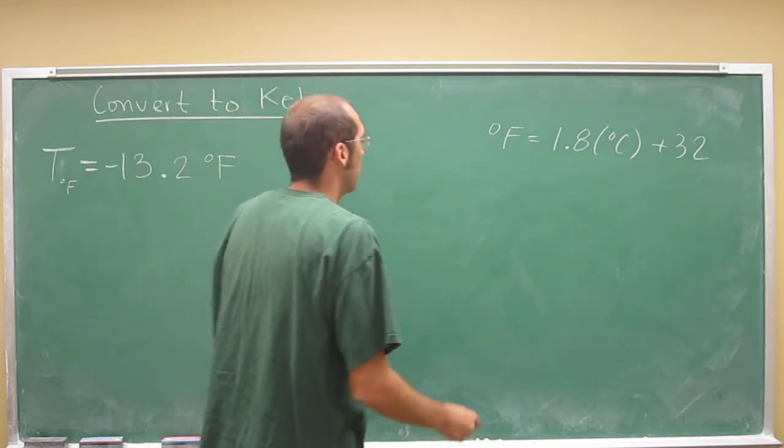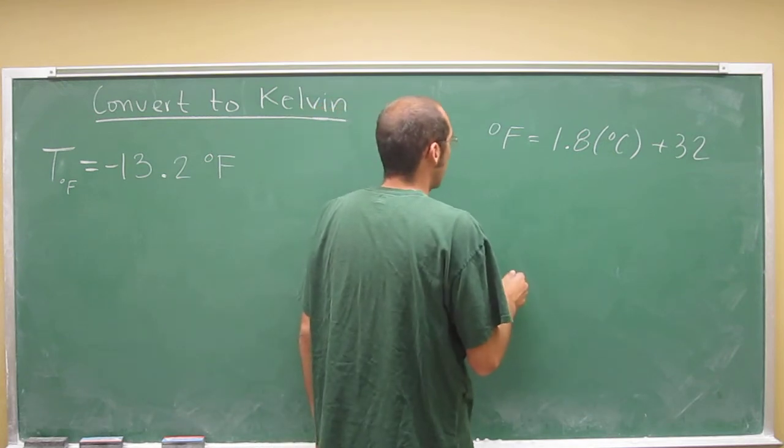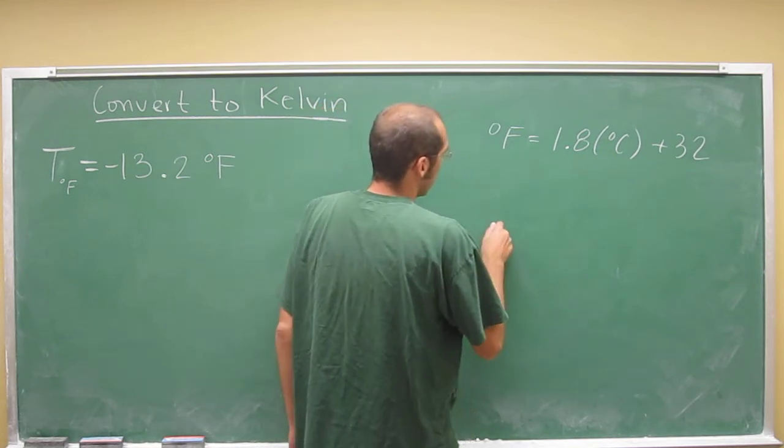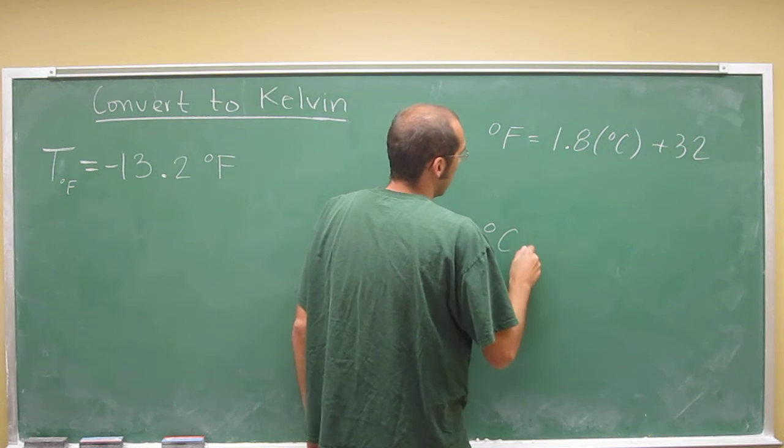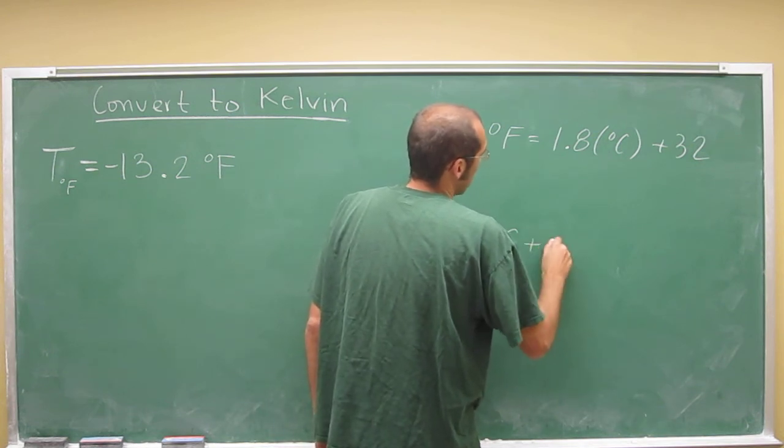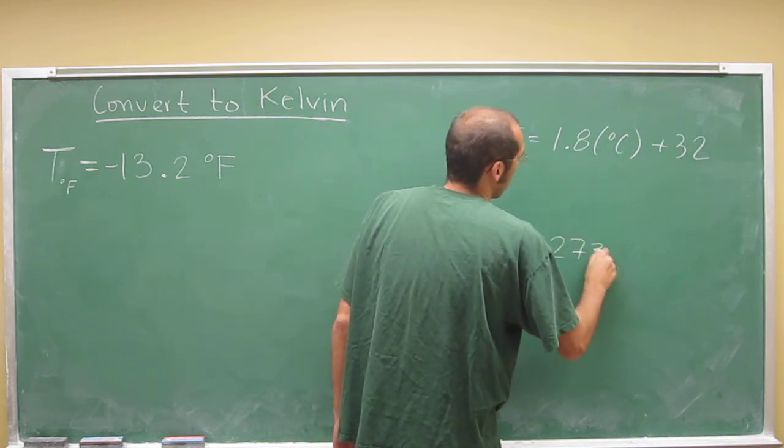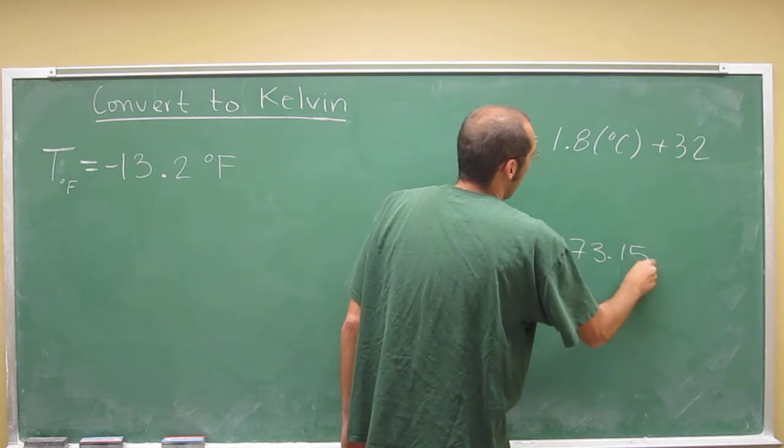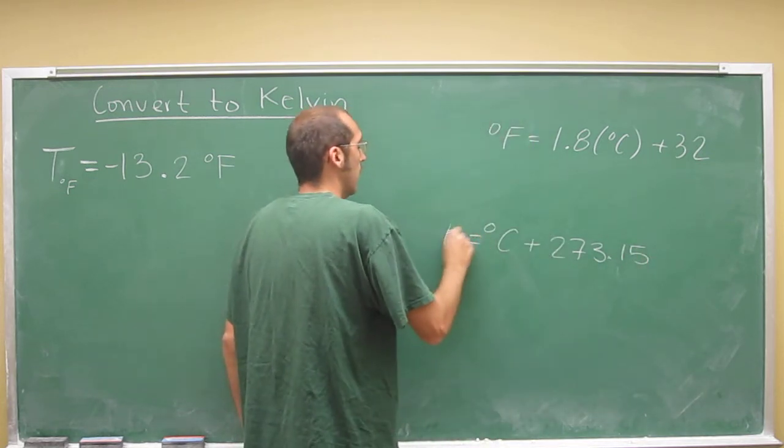And you'll also have to remember the Kelvin formula: °C + 273.15 = K.